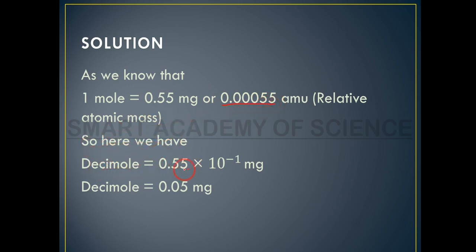Decimole is equal to 0.55 x 10 power minus 1. This value is DC equal to 12 before minus 1.